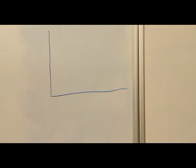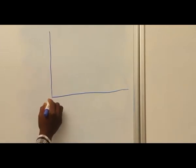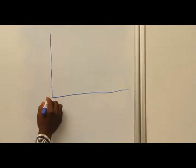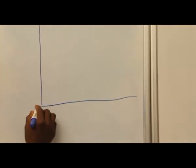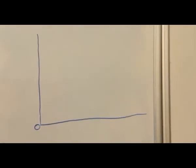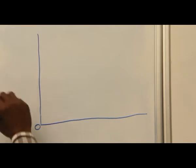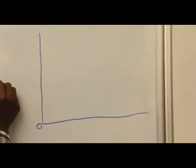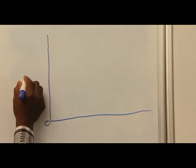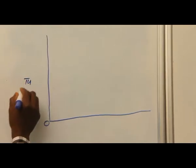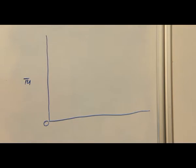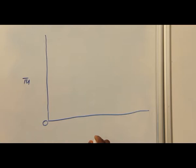Okay. This is the origin of the graph. Here I have zero. Then we call this place Total Utility, and we call this place Quantity. Quantity comes in.